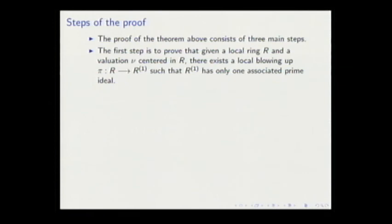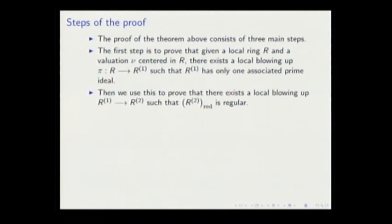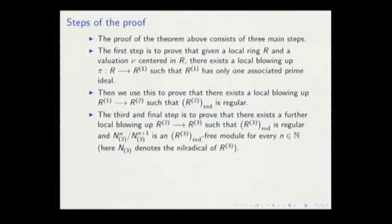The second step is the equivalent of what we did for the domain case. That is, blow up a little more in order to obtain the regularity of such a ring. The third step would be, since we have already achieved the regularity of the ring, we have to have the normal flatness of this map. So we do a third step to obtain such condition.